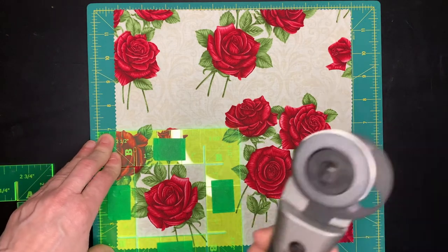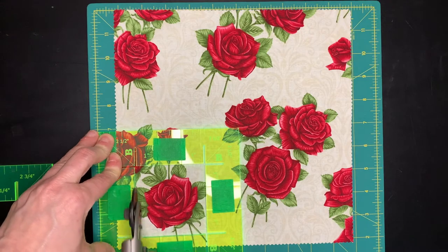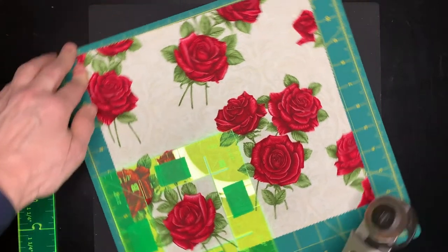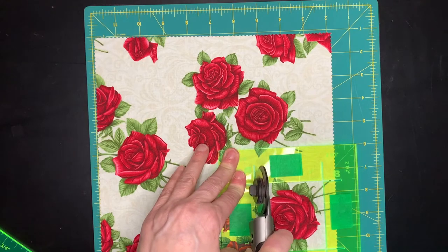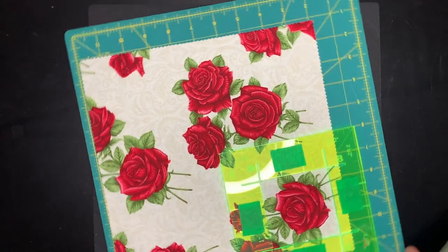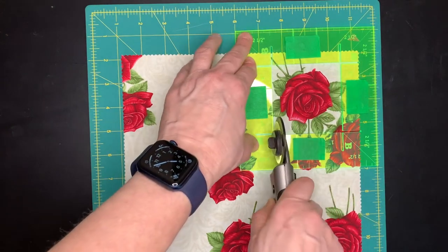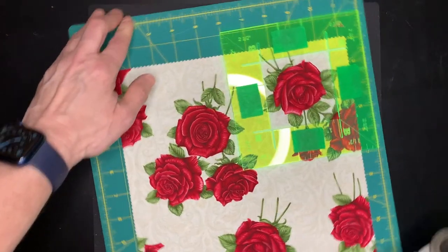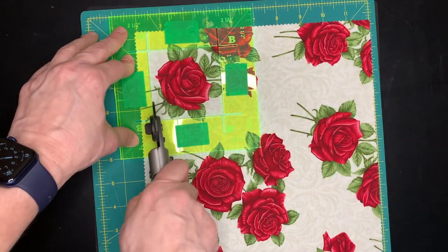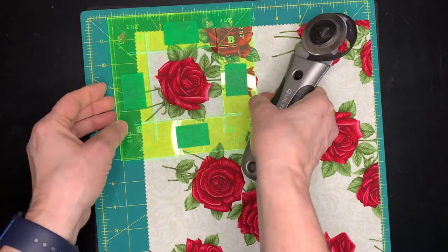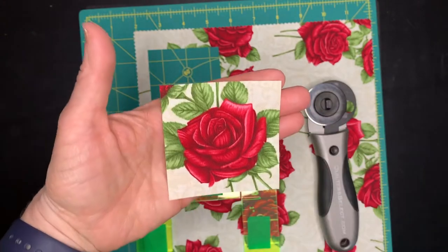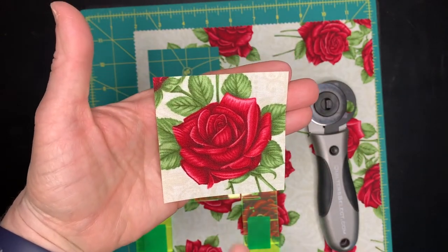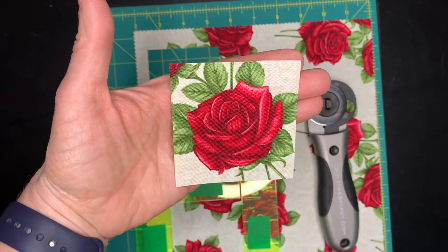And then you take your rotary cutter, put it in the slots. Again, remember we're going to use a 45 millimeter or smaller rotary cutter because the 60 millimeter is a little too big for these slots. One more cut. And we have a perfect rose that will be two and a half inches perfect when it's sewn in.